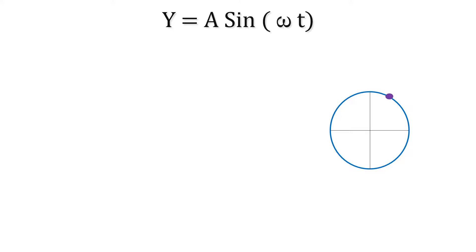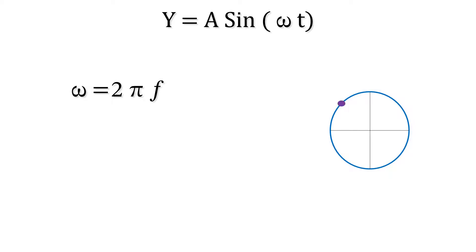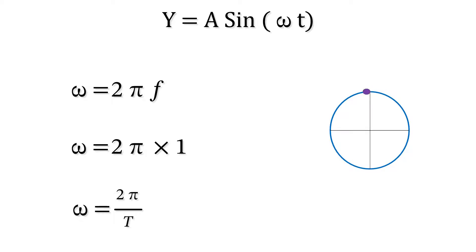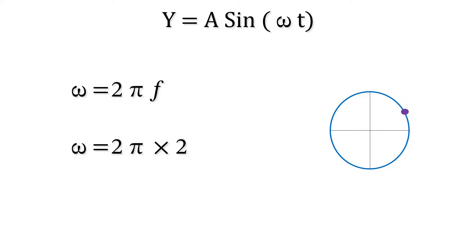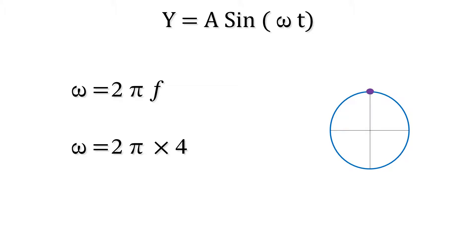Some real-time simulations as f changes: here we're spinning through a third of a spin per second, so the frequency is one third hertz, because it's taking three seconds to spin through a whole circle — the period is three seconds. Now we're spinning through one whole circle per second, so the frequency is one hertz and the period is one second. Now spinning twice through the circle in one second: f is two hertz, so the period is one over two, or half a second. Now spinning through four circles per second: the frequency is four hertz, so the period is one over four, or a quarter of a second.